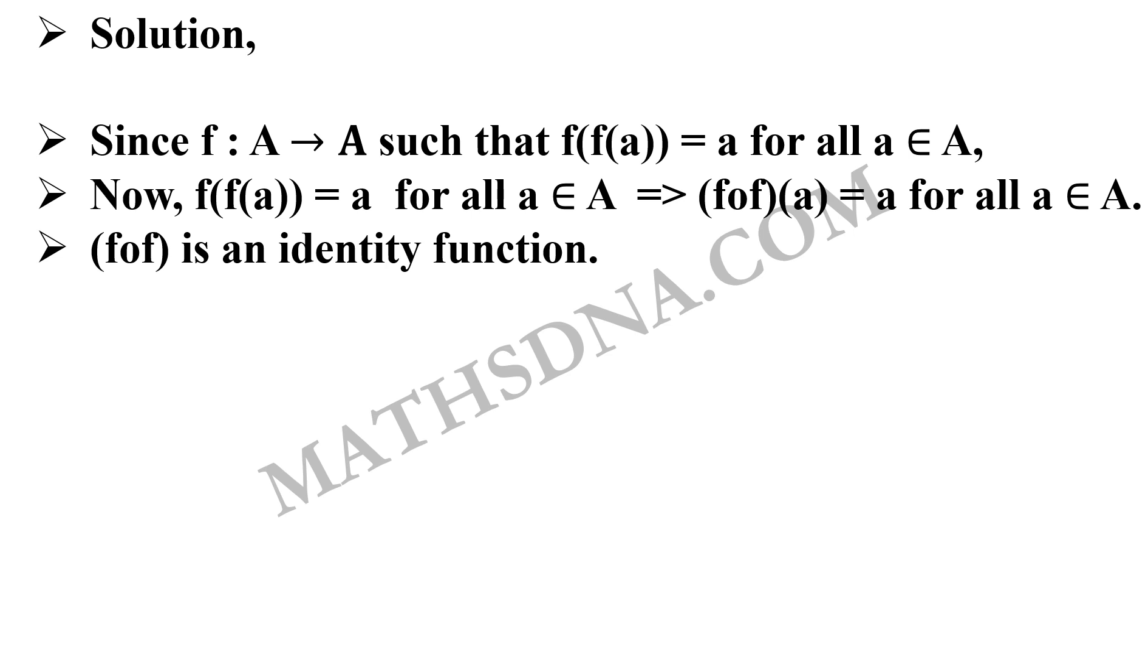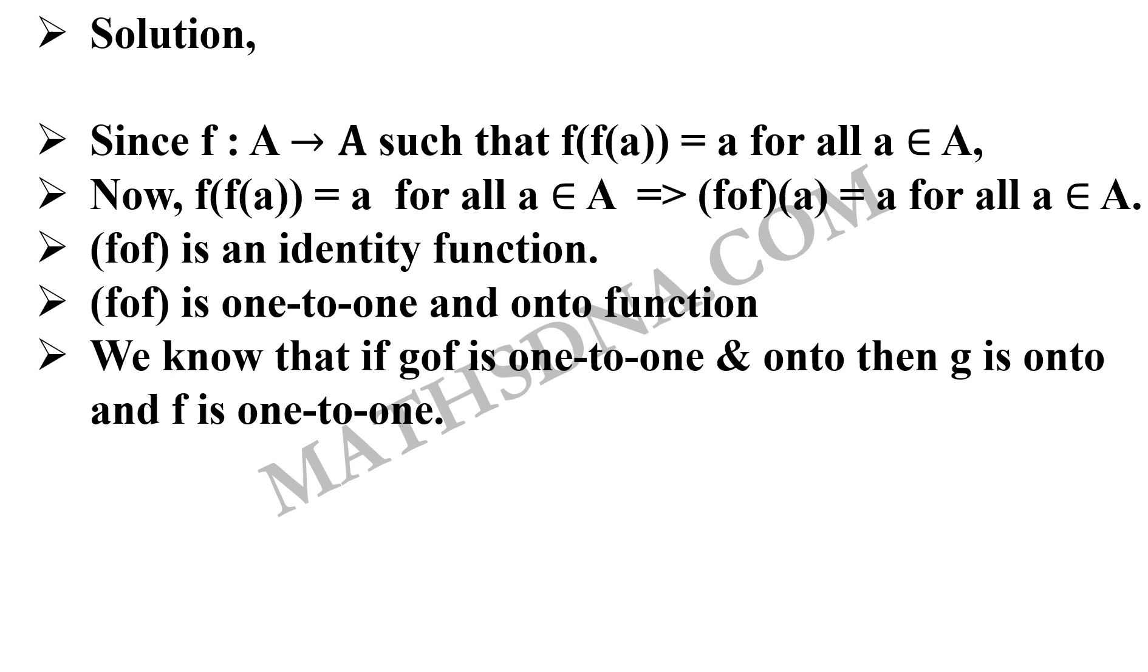So fof will be one-to-one and also onto. Now we have a very useful result and I recommend you to note it down as well: if gof is a one-one onto function, then g is onto and f is one-one. I repeat: if gof is one-one and onto, then g is onto and f is one-one. Now here g is also f and f is also f, so our f will be one-one as well as onto.